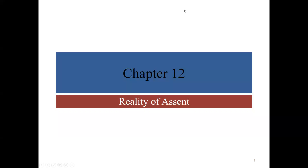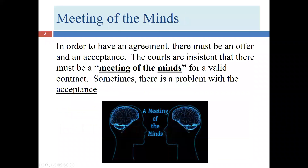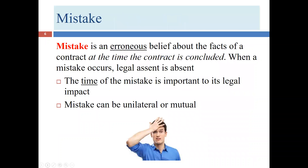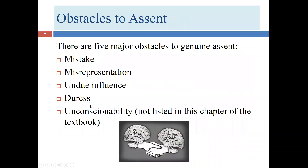Welcome to our second lecture covering Chapter 12, called The Reality of Assent. When we were last together, we discussed two of the five obstacles to assent that can affect the formation of an agreement. We talked about mistake — both mutual and unilateral — and we talked about misrepresentation.